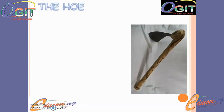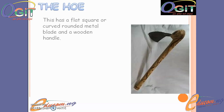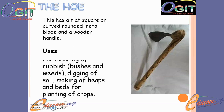The next simple farm tool is the hoe. The hoe, just like the cutlass, has a wooden handle and also has a flat square or curved rounded metal blade. The uses of the hoe include clearing of bushes and weeds, digging of soil, and making of beds for planting of crops such as vegetables and yam.